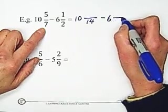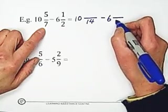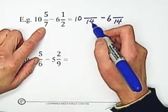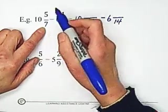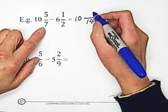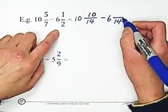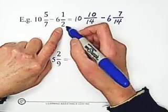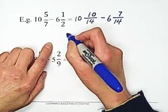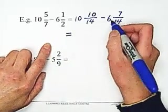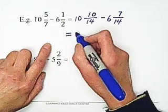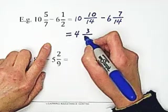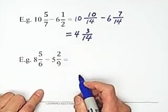We write each fraction over 14. From 7 to 14, we multiply 2. That's why we multiply 2 to the numerator, which gets 10. Also, this becomes 7 over 14. 1 over 2 becomes 7 over 14. Then we just subtract the whole number portion. 10 minus 6 equals 4. Subtract the numerators, 3 over 14. The answer is 4 and 3 over 14.